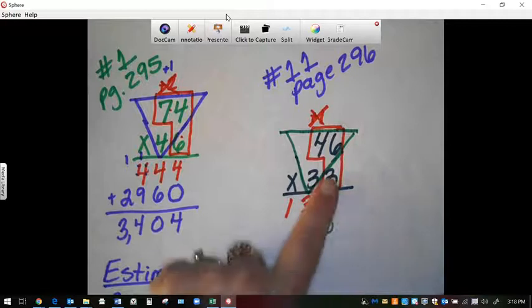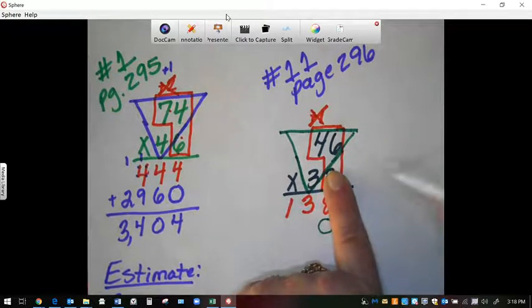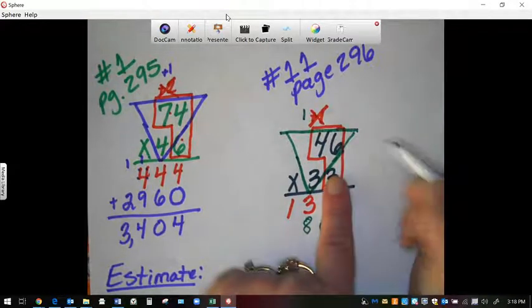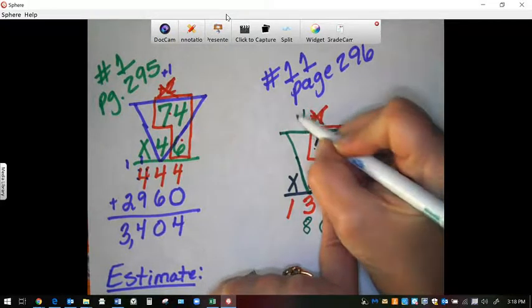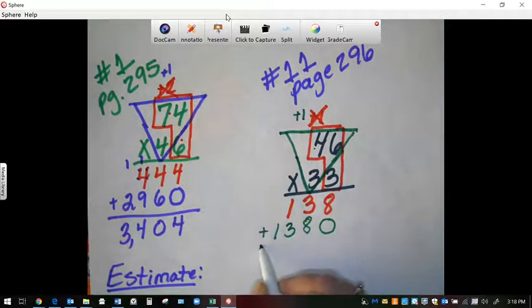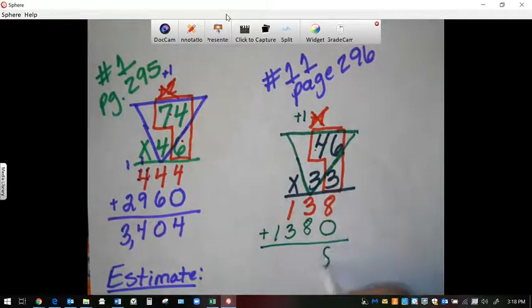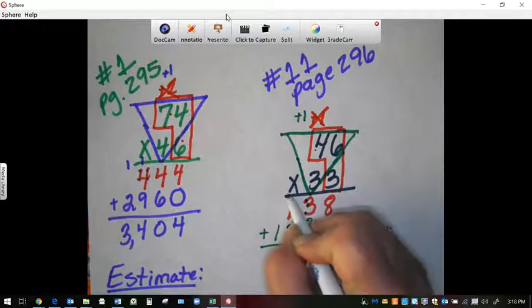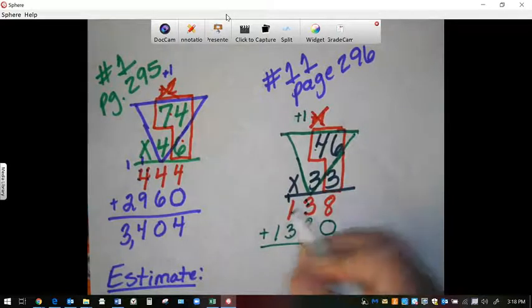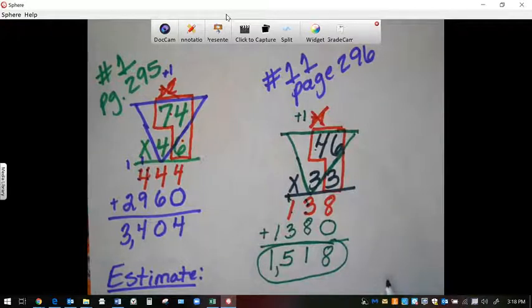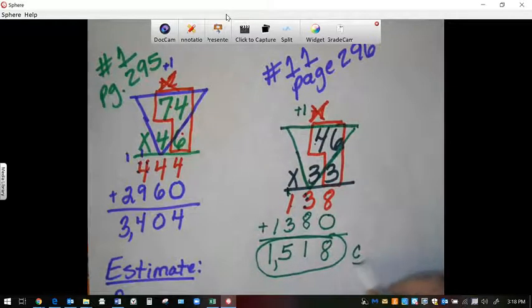Alright, so I'm going to only work inside the pizza. 6 times 3 is 18. I have to regroup. And then 6 times 4 is 12. Plus 1 is 13. And then we're going to add it. 8 plus 0 is 8. 8 plus 3 is 9, 10, 11, regroup. 3, 4, 5. And 1 plus nothing is 1. Your final answer is 1,518. And that was answer choice letter C.